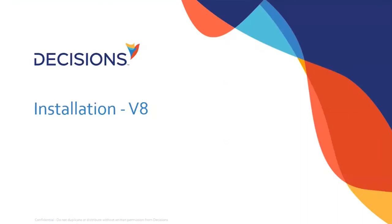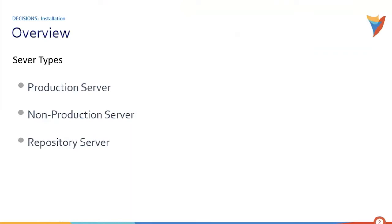Welcome to another session in Decisions training. In today's session we will look into how to install Decisions v8. Before we go ahead and install version 8, let's look at the prerequisites required for installation, a quick intro on different types of servers, hardware requirements, and software requirements. There are three different types of servers: production server, non-production server, and repository server.